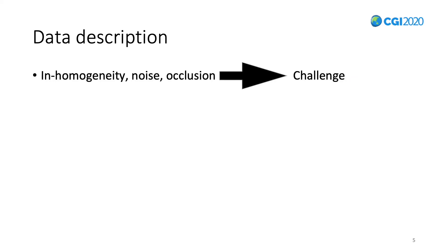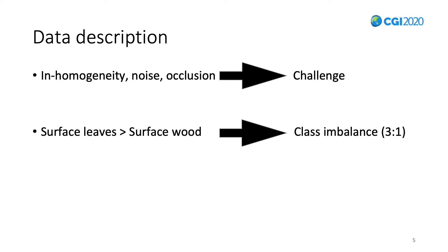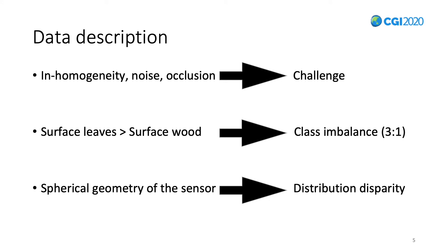Data acquired by LiDAR devices present constraints such as inhomogeneous sampling, occlusion, and noise, which make them a challenge to process. Because of the geometric characteristics of trees, the classes are not represented equally in the point clouds. The accumulated surface of the leaves is superior to the trunk and branches, making leaves most susceptible to be hit by the laser. On average, we observe a ratio of leaf to wood class of 3 to 1. Because of the spherical geometry of the LiDAR scanning process, the spatial sample distribution suffers from disparity — many 3D points are located on the trunks close to the sensor, whereas fewer points are located on the upper part of the trees. To limit redundancy, we subsample the raw point clouds using Poisson disk sampling.